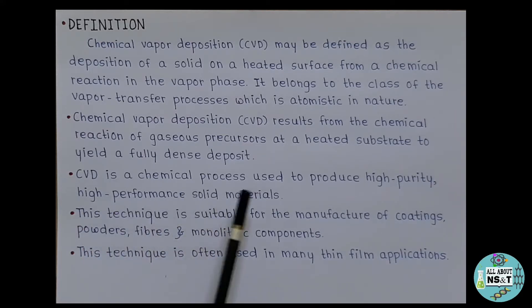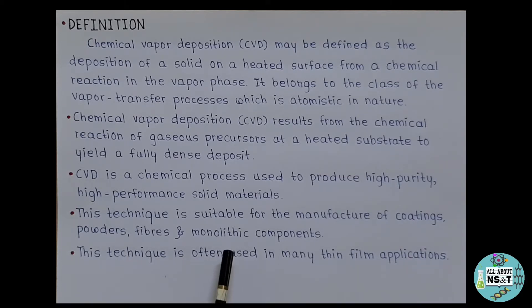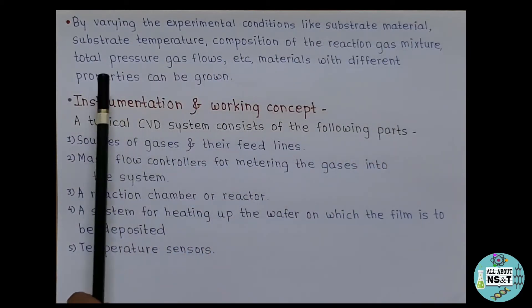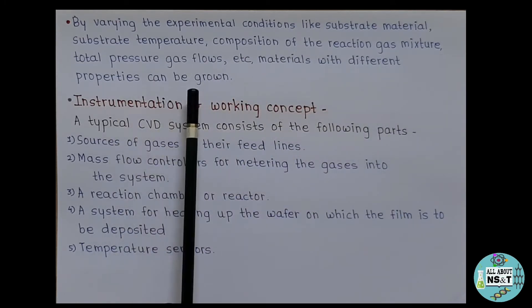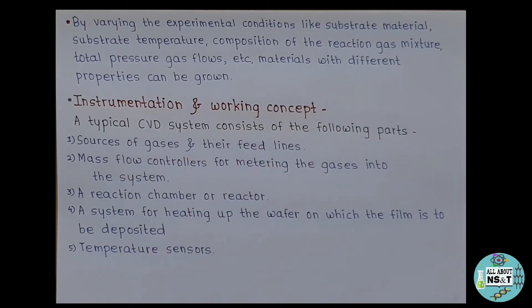CVD is a chemical process used to produce high purity, high performance solid materials. This technique is suitable for the manufacture of coatings, powders, fibers, and monolithic components, and is often used in many thin film applications. By varying experimental conditions like substrate material, substrate temperature, composition of the reaction gas mixture, total pressure, gas flows, etc., materials with different properties can be grown.